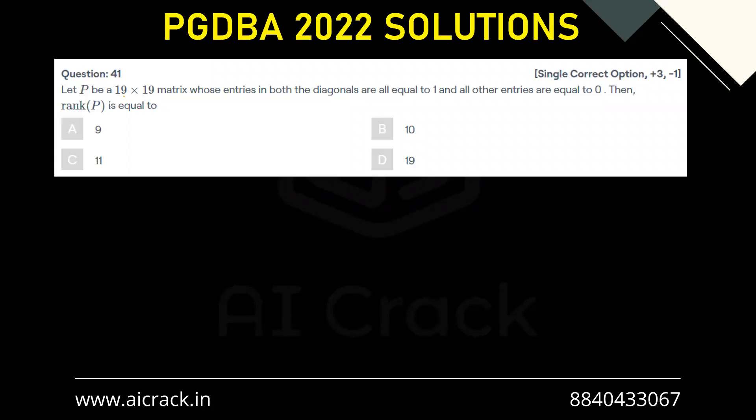Hi everyone, let's solve question number 41. Let P be a 19 cross 19 matrix whose entries in both the diagonals are equal to 1 and all other entries are equal to 0. Find the rank of matrix P.